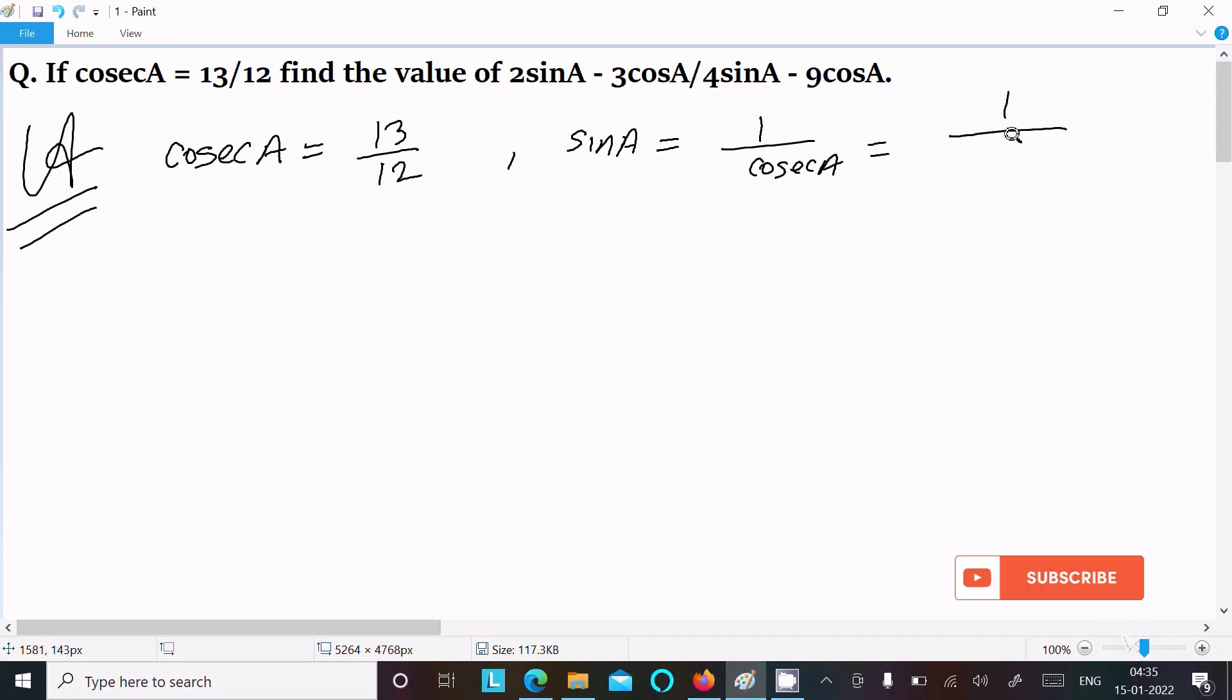Since cosecA is 13/12, we move the 12 up, so we can write sinA = 12/13.